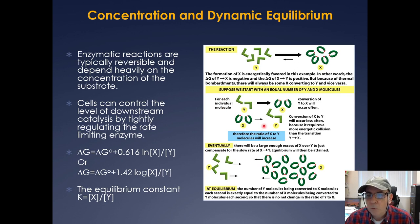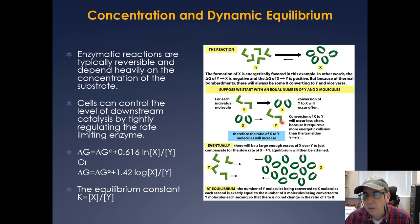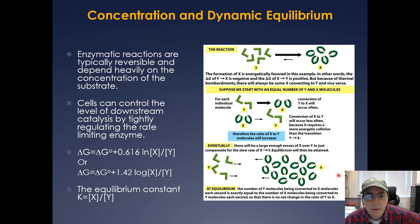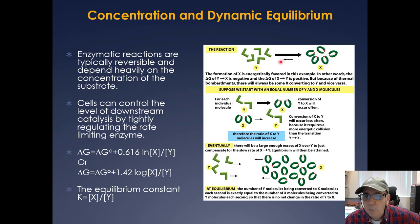Starting with an equal number of X's and Y's, if the formation of X is favorable, this conversion will occur often, whereas X back to Y will occur less often. The Y's will go to X until you reach equilibrium, where an equal number of X's go back to Y and an equal number of Y's go to X. The equilibrium constant K is the concentration ratio of X and Y.